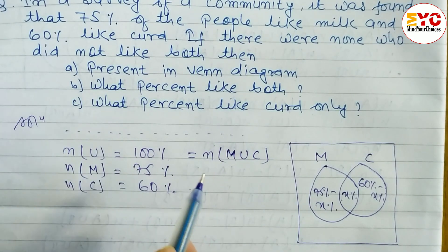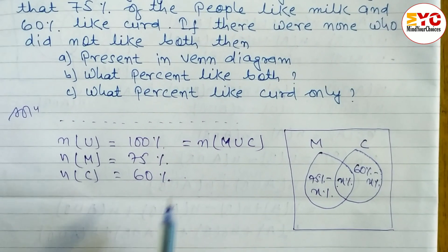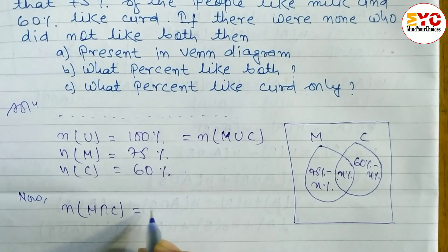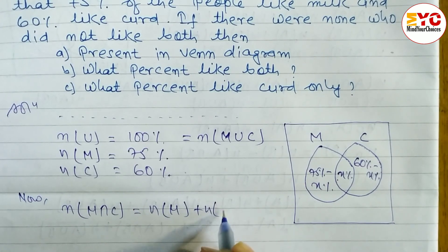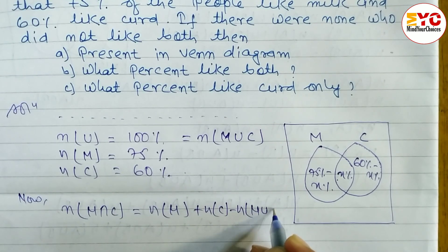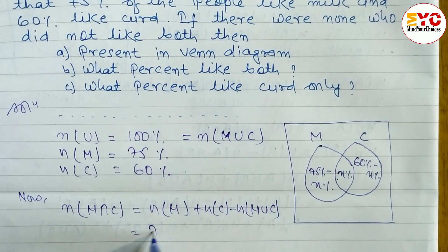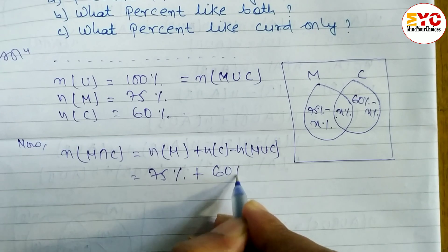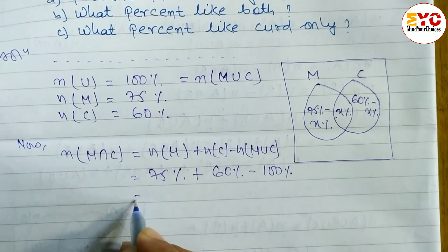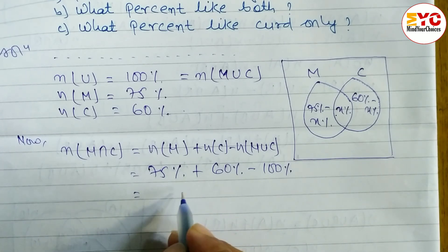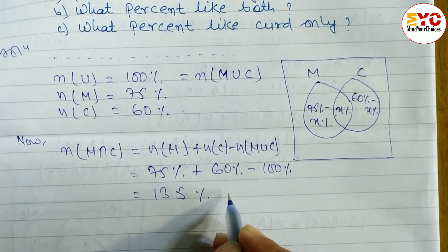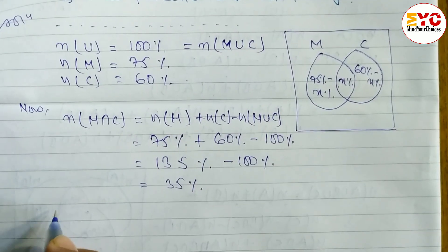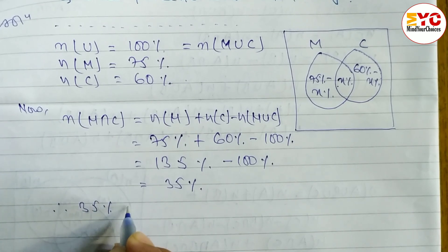For part two, we need to find the intersection. Using the formula: n(M ∩ C) = n(M) + n(C) − n(M ∪ C). Substituting: n(M ∩ C) = 75% + 60% − 100% = 135% − 100% = 35%.